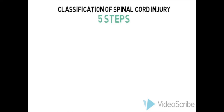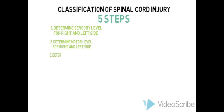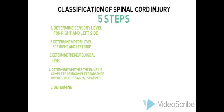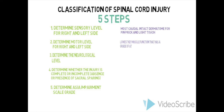Once the examination has been conducted, the scores are added up and the spinal cord injury is classified in five steps: the sensory level, the motor level, the neurological level of injury, whether it is complete or incomplete, and the ASIA impairment scale grade. The sensory level is defined for the right and left sides as the lowest segment with normal sensory function in both light touch and pinprick. The motor level is defined as the lowest level with at least 3 out of 5 power, with all segments above being 5 out of 5. The neurological level of injury is the lowest level at which both sensory and motor functions are intact.